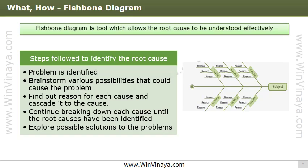Having categories will help you structure idea generation and get more relevant causes. Step three: for each cause, identify other specific factors which may be the reasons, and make these the labels of sub-branches. Step four: continue breaking down each cause until you reach a root cause. Step five: explore possible solutions to the problem.